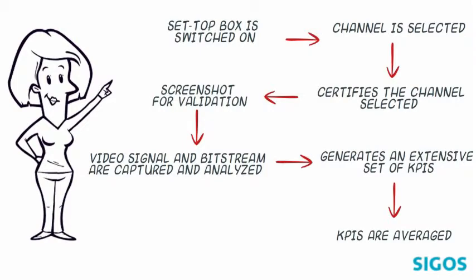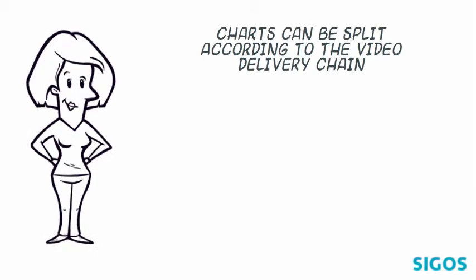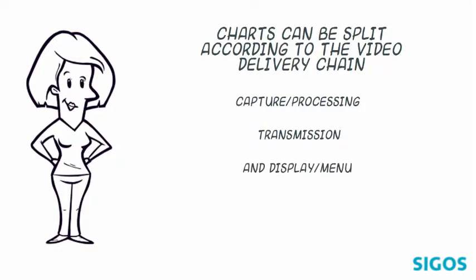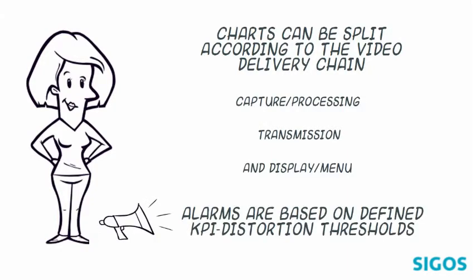These KPIs are averaged over a total number of captured frames. They can be easily visualized in different charts. The charts can be split according to the video delivery chain: capture, processing, transmission, and display menu. Alarms are set up based on defined KPI distortion thresholds.